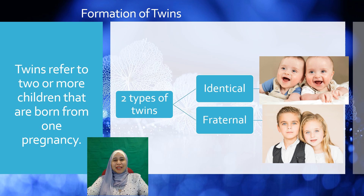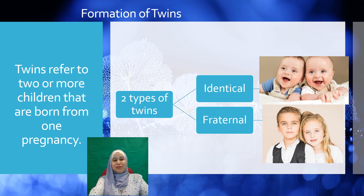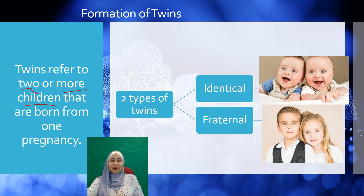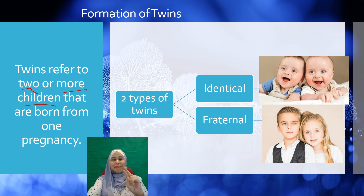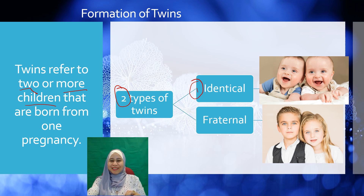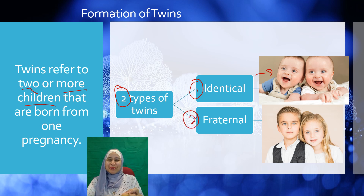Now we look at the formation of twins. Twin refers to two or more children that are born from one pregnancy. There are two types of twins: the first is known as identical twins, and the second is known as fraternal twins.